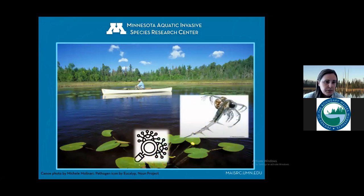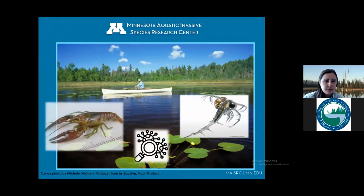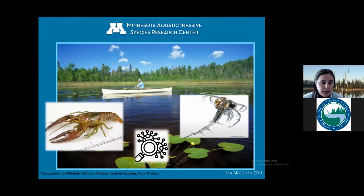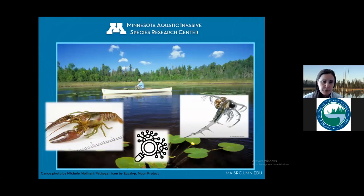I also want to briefly mention Rusty Crayfish because these are a big concern for Canadian Parks and U.S. Forest Service managers. They've been around since the 80s or 90s and are believed to have been introduced by anglers as live bait. These guys are significantly larger and more aggressive than our native prey fish species, and their omnivorous feeding habits impact plant, fish, and invertebrate communities. Preventing their spread is fortunately pretty easy — don't touch them, don't move them, and don't bring any more of them into the Boundary Waters.